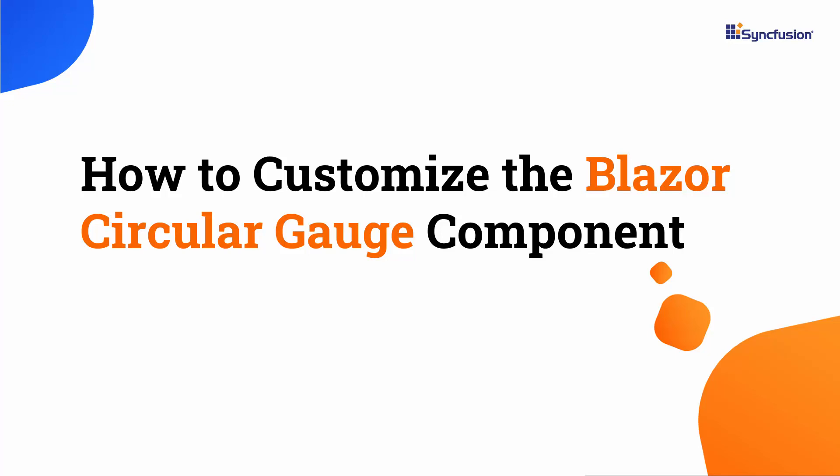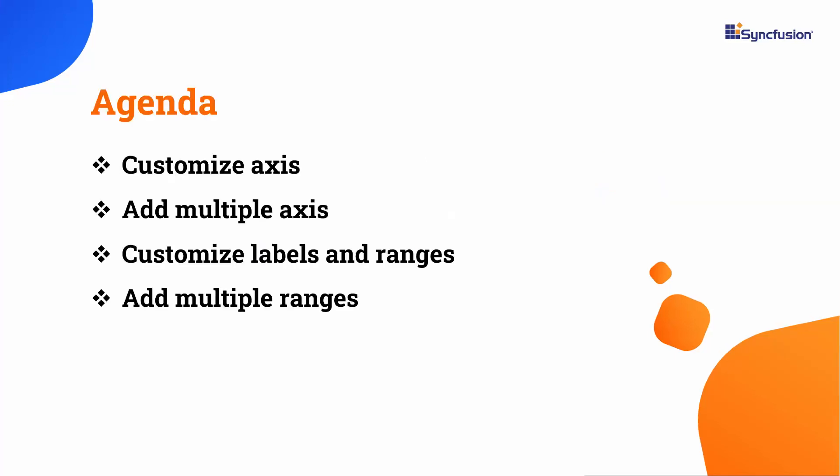Hi everyone, welcome back to this tutorial on how to customize the Blazor Circular Gauge. I will show you how to customize the axes, add multiple axes, customize labels and ranges, and add multiple ranges to the circular gauge.